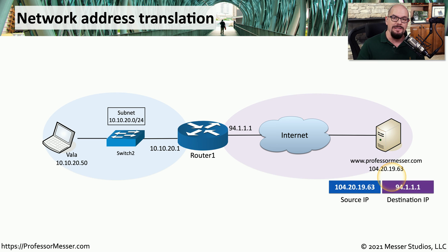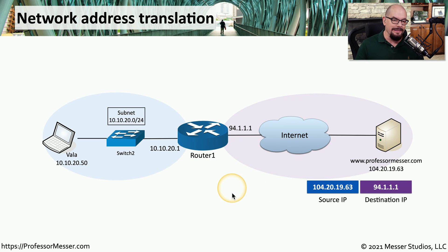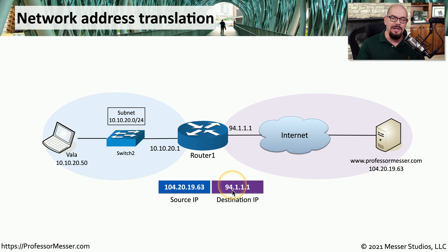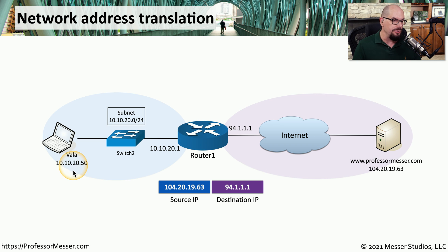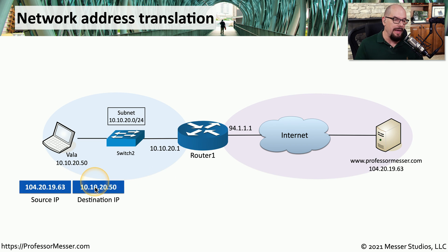Obviously, we can't send the return traffic to the original 10.10.20.50 private IP address. So the Professor Messer website simply reverses the IP addresses it received — professormesser.com becomes the source, and the destination IP is the translated address that was created by the router. This packet is sent to router 1, which has a previous configuration stating that anything received on 94.1.1.1 needs to be translated to the internal IP address used by VALA. The router makes that network address translation and sends the packet to VALA's internal IP address of 10.10.20.50.